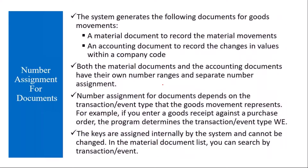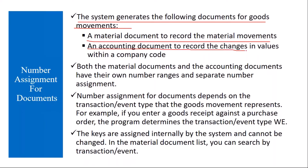The system generates the following documents for goods movement: a material document to record the material movements, and an accounting document to record the changes in values within a company.